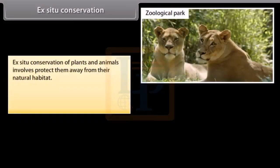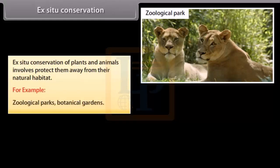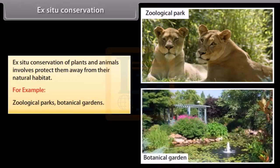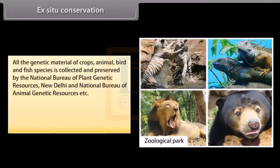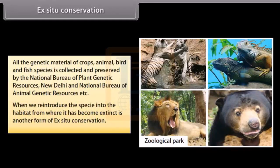Ex-situ Conservation. Ex-situ conservation of plants and animals involves protecting them away from their natural habitat. For example, zoological parks, botanical gardens. All the genetic material of crops, animal, bird and fish species is collected and preserved by the National Bureau of Plant Genetic Resources, New Delhi and National Bureau of Plant Genetic Resources, etc. When we reintroduce the species into the habitat from where it has become extinct is another form of ex-situ conservation.